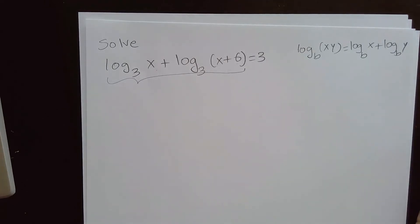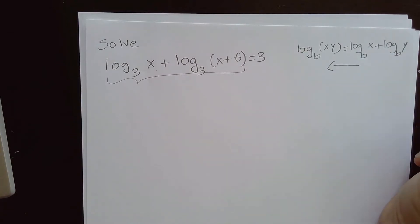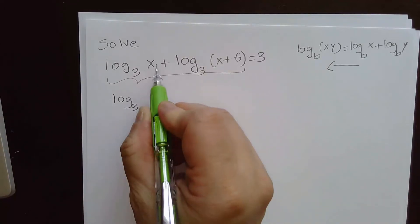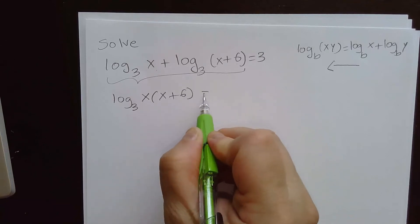Now what we have here is this case. We need to go from two logarithms to one logarithm. So what we get here is log base 3 of x times x plus 6 equal to 3.